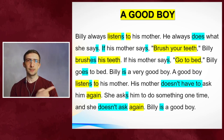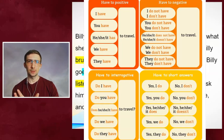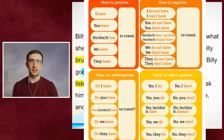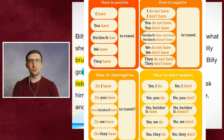Let's have a look here — 'doesn't have to.' Have to is a modal verb of obligation, so she has a necessity to do something. But in this case she doesn't have a necessity. It's present simple — he/she/it doesn't have to, but I/you/we/they don't have to do something.